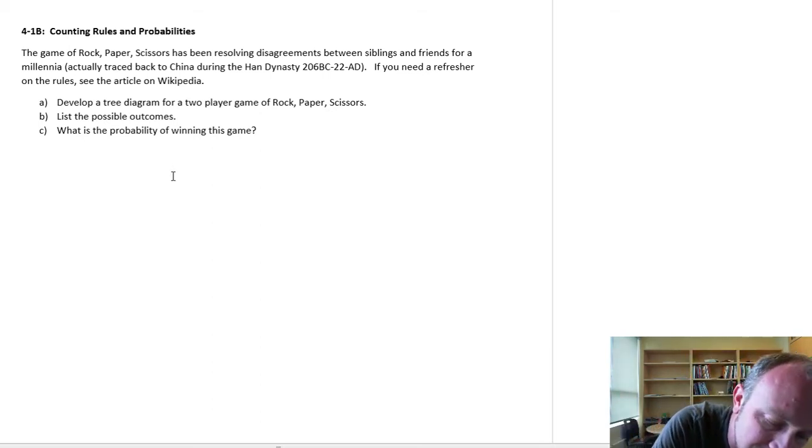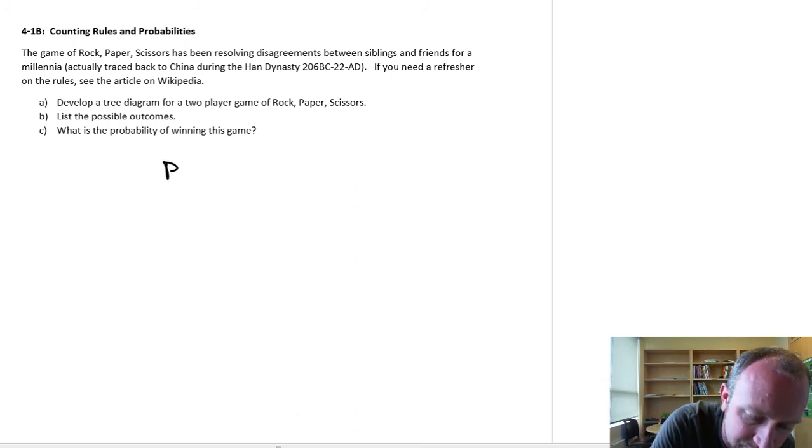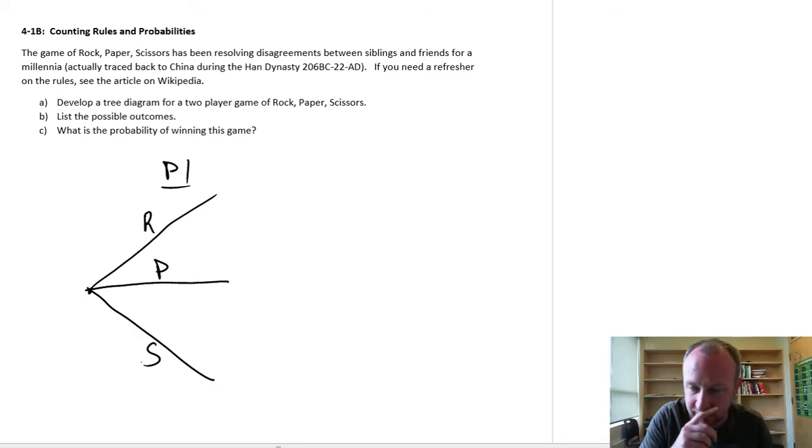So here what I'm going to do, here I'll have player one. So player one has a choice between either choosing rock, paper, or scissors. So player one picks one of those three.